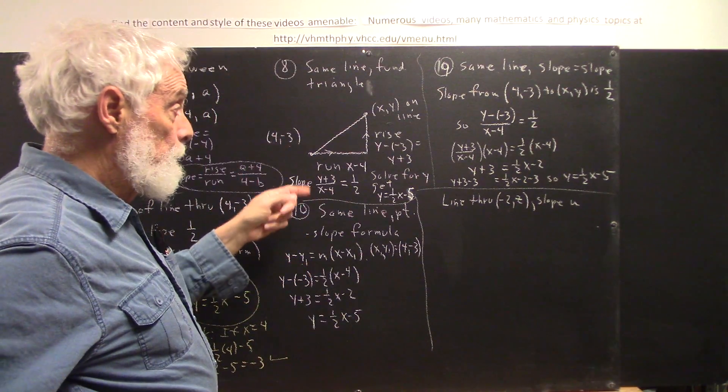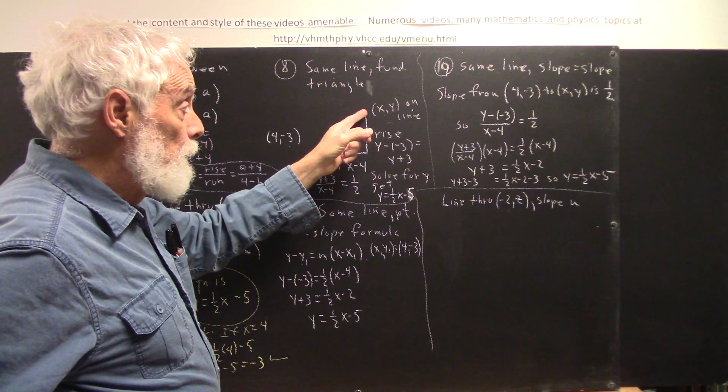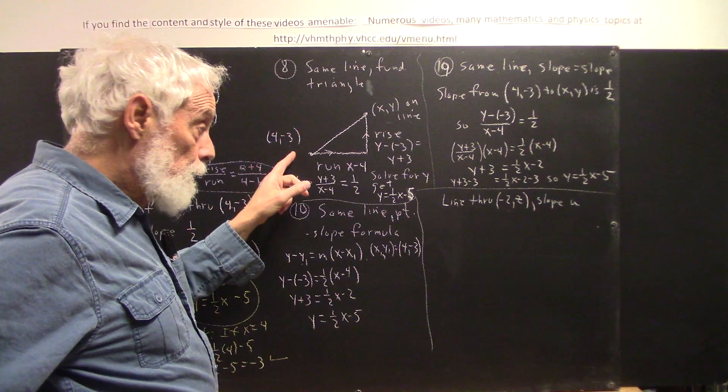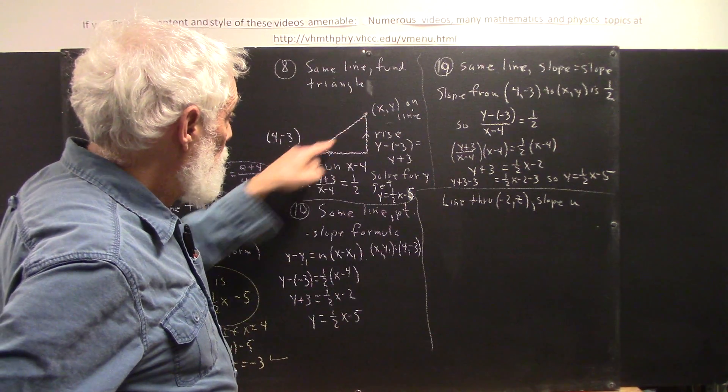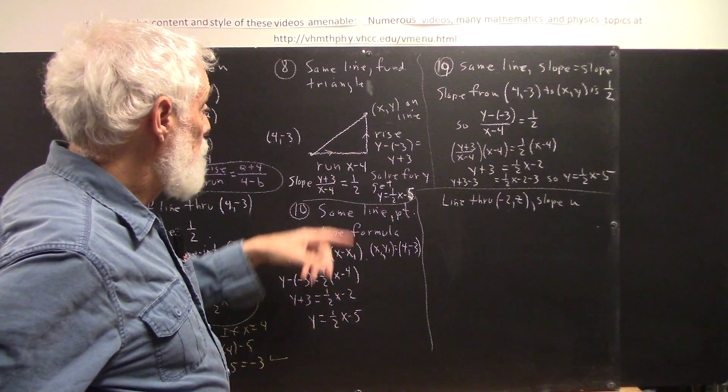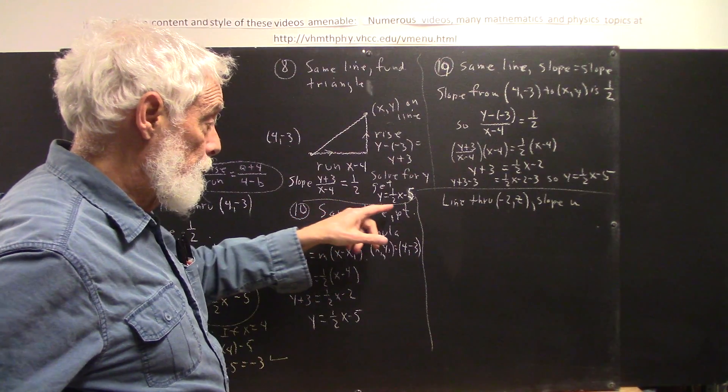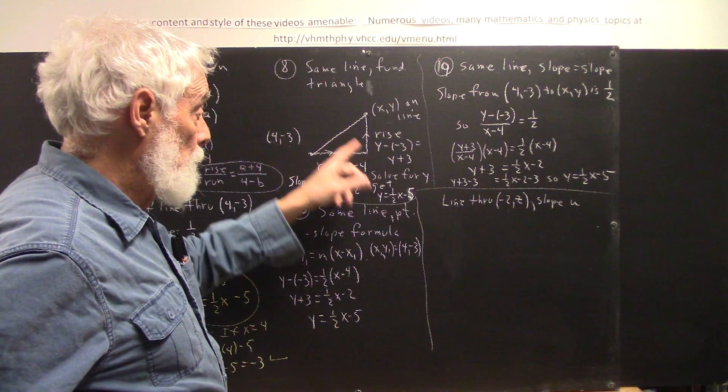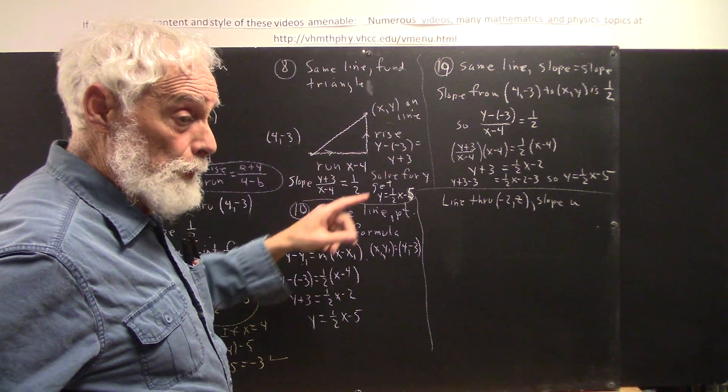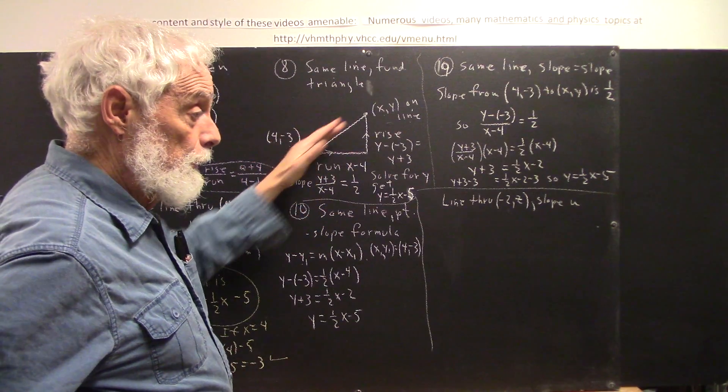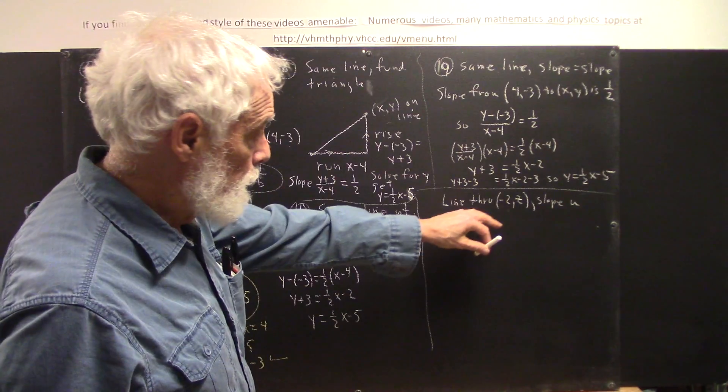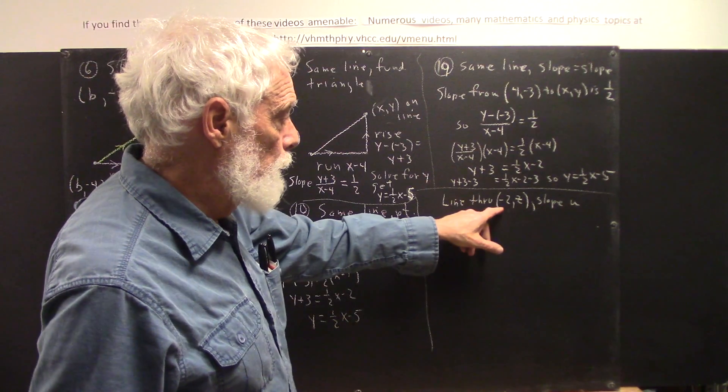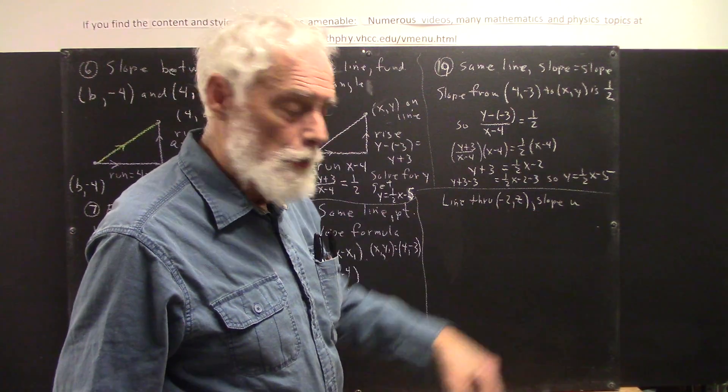And this picture simply again says that x, y is on the line. The line goes through 4 negative 3. And now you know that the slope has to equal 1 half. You put that information together, you get this. And this is exactly what we mean by saying the point x, y is on the line through this point having this slope. We'll do another exercise. We're going to find a line through negative 2 z with a slope of u.